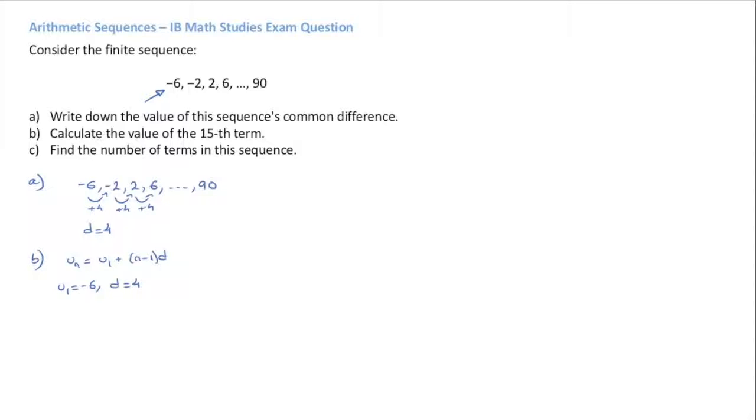So we can go ahead and write UN, the nth term, equals negative 6 plus N minus 1 times 4. And so for the 15th term, we simply need to replace N by 15 and calculate.